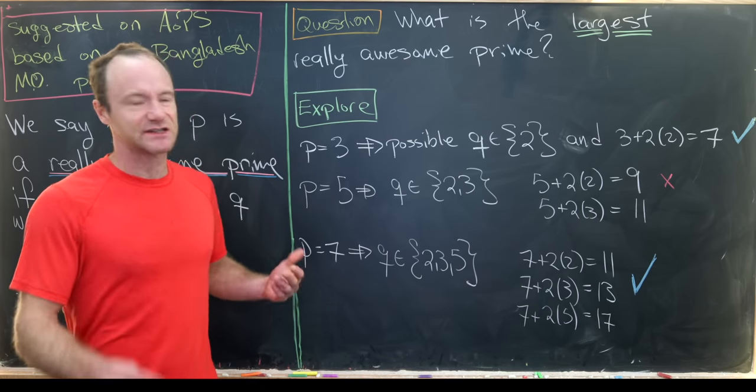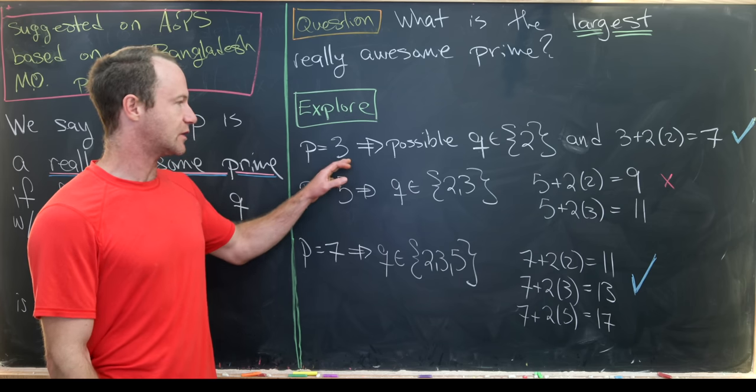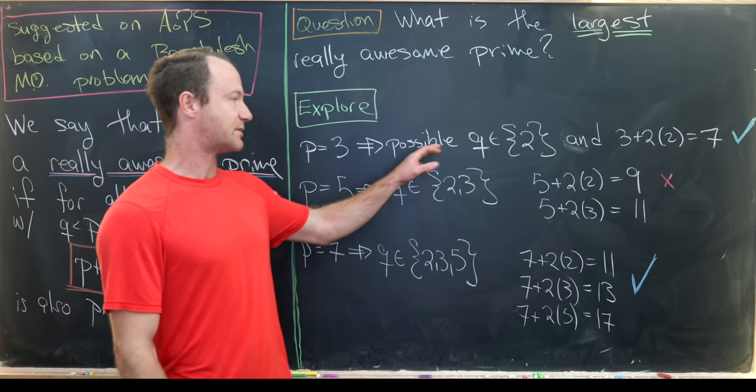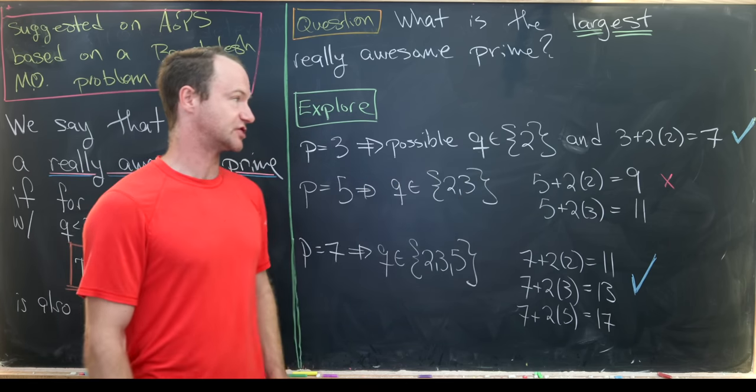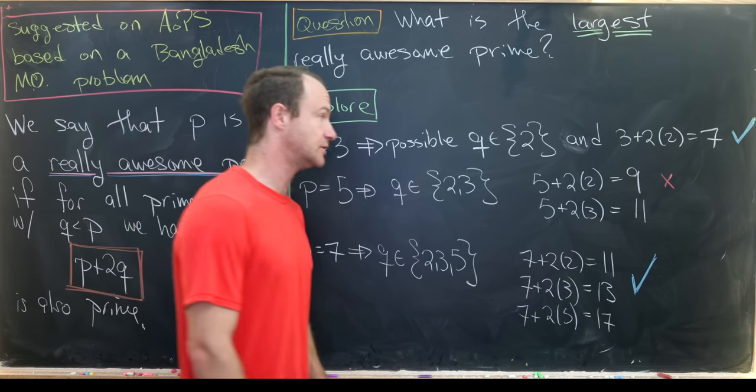We'll start with p equals 3, which means the possible smaller primes are just the number 2. So q could be equal to 2.